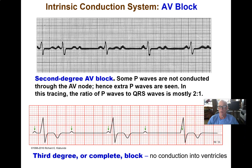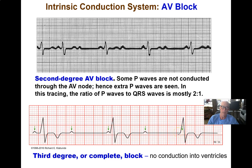Third degree or complete block means there's no correspondence between what's happening in the atria and what's happening in the ventricles. The SA node is still firing and triggering atrial contraction, but the QRS complex — the ventricles — are being triggered by the AV node or the AV bundle entirely independently of the SA node and the atria. The ventricles are being paced completely independently on their own by that part of the intrinsic conduction system — complete heart block.